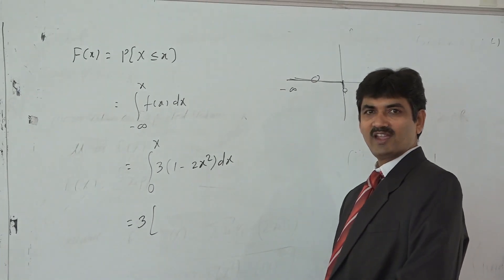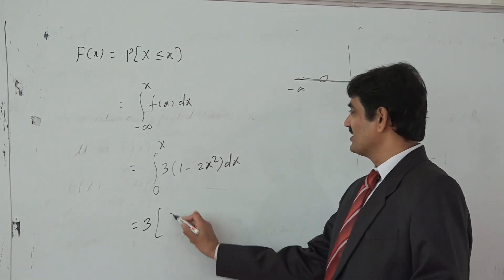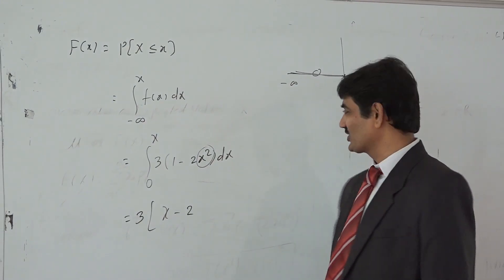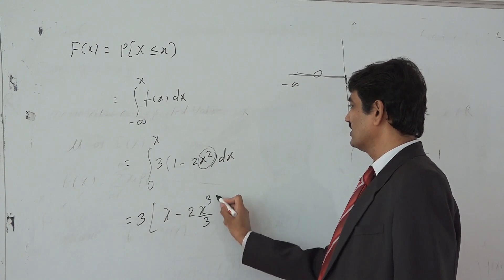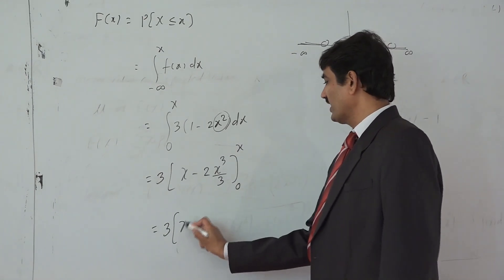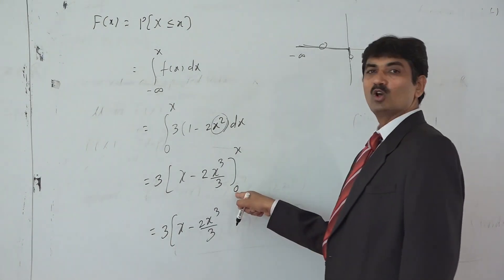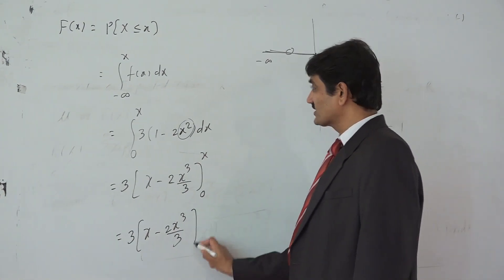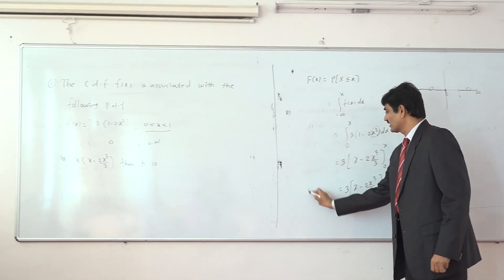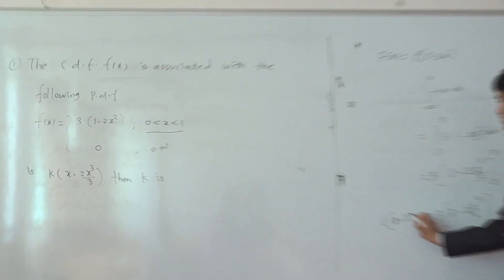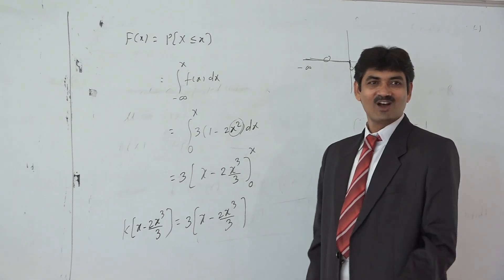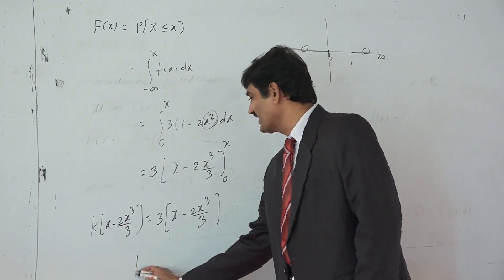Evaluating the integration: the integral of 1 with respect to x is x, and the integral of x² is x³/3. Over the range 0 to x, putting the upper limit gives x − 2x³/3, and the lower limit gives 0. So the cumulative distribution function is 3·(x − 2x³/3). Comparing this with the given expression K·(x − 2x³/3), we get K = 3. It is very important to remember the formula for the cumulative distribution function of a continuous random variable.